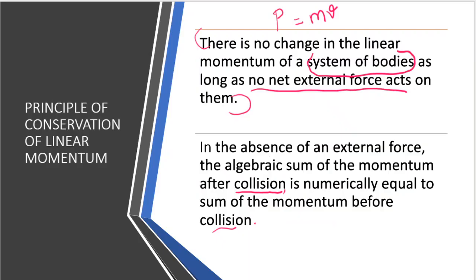Students, we already discussed the concept of linear momentum — linear momentum P is equal to mass into velocity. Now, conservation of linear momentum: its statement is, there is no change in the linear momentum of a system of bodies as long as no net external force acts on them. The important points to note are: system of bodies, and no net external force.